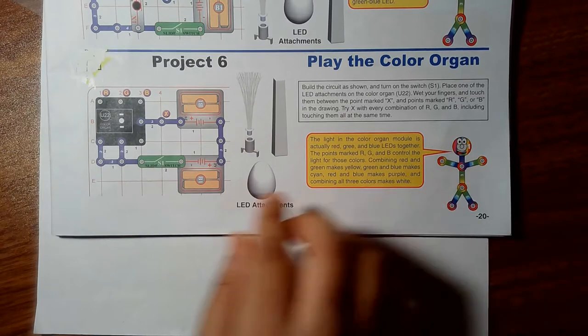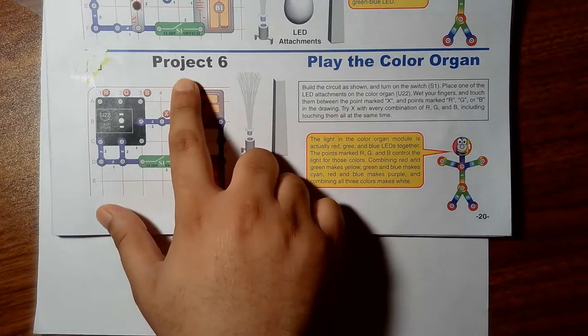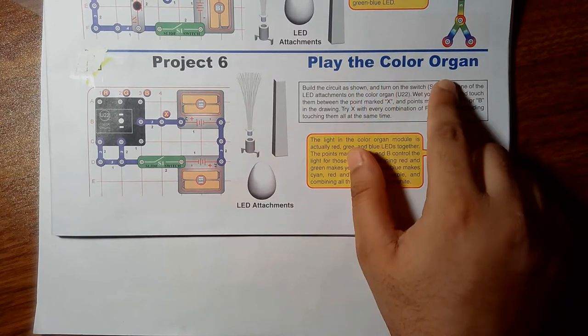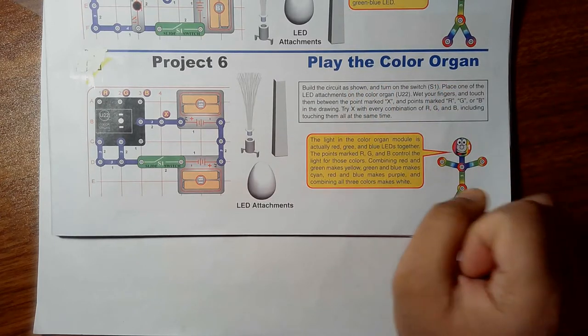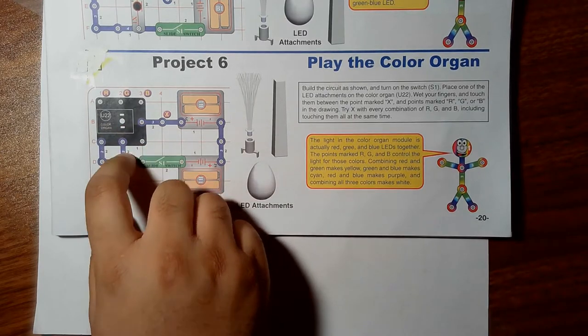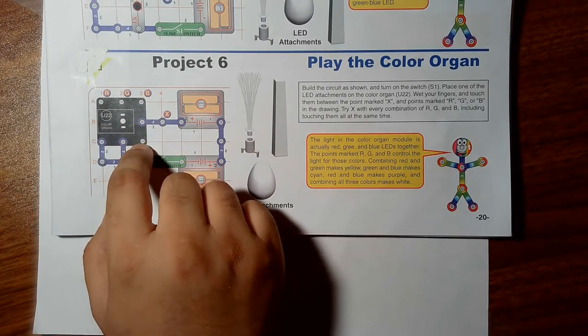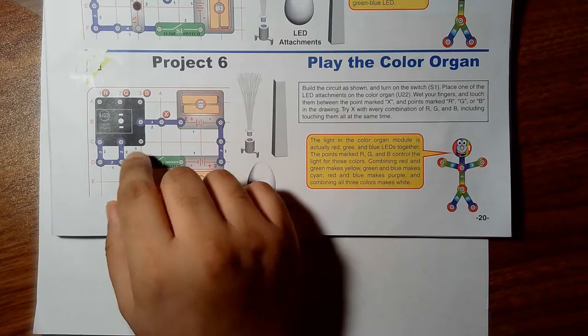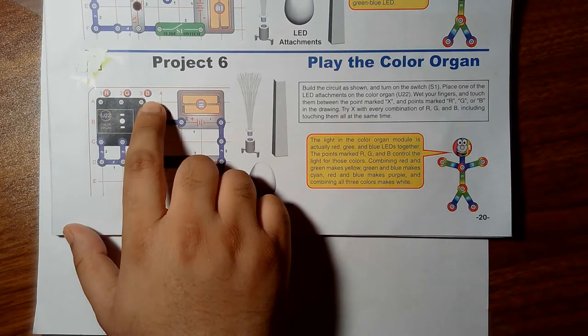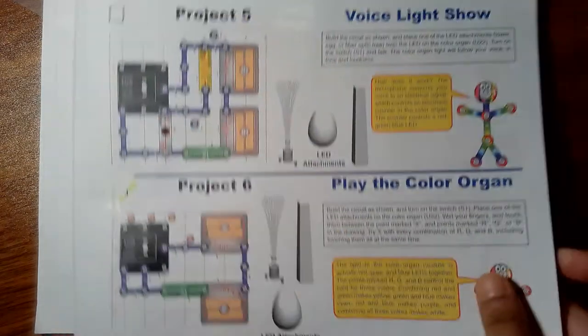Hello campers, now we will play with this Project 6. This is 'Play the Color Organ,' that means we will basically generate different colors on this color organ. This is an IC that will generate different frequency of colors, so we will see red, green, and blue. All three colors will generate on this IC.